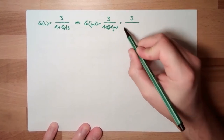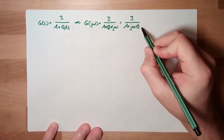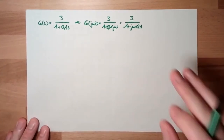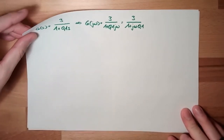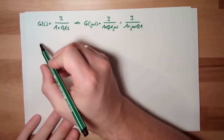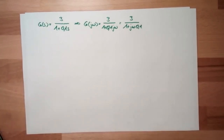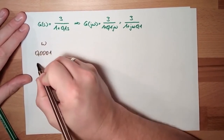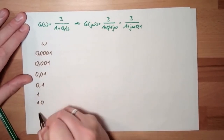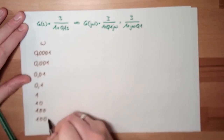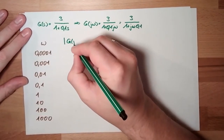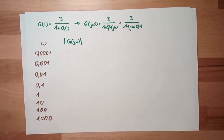What is 3 divided by 1 plus j omega times 0.1? I simply calculate for different omegas, different values. Looking at my Bode plot I've prepared, we start at 0.001. We use omega values: 0.0001, 0.001, 0.01, 1, 10, 100, 1000. Here we use the absolute value, and here we are going to write the argument.